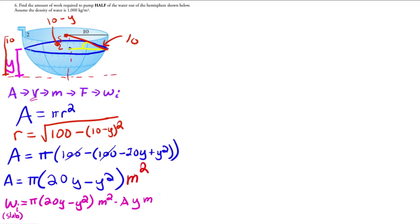Times 9.8 meters per second squared, which is going to give me the force, and then times, now this one is critical, this is the distance that this slab needs to travel to go out of the tank from where it is. So this guy is located at y, so then the distance that it needs to travel is going to be 12 minus y meters.